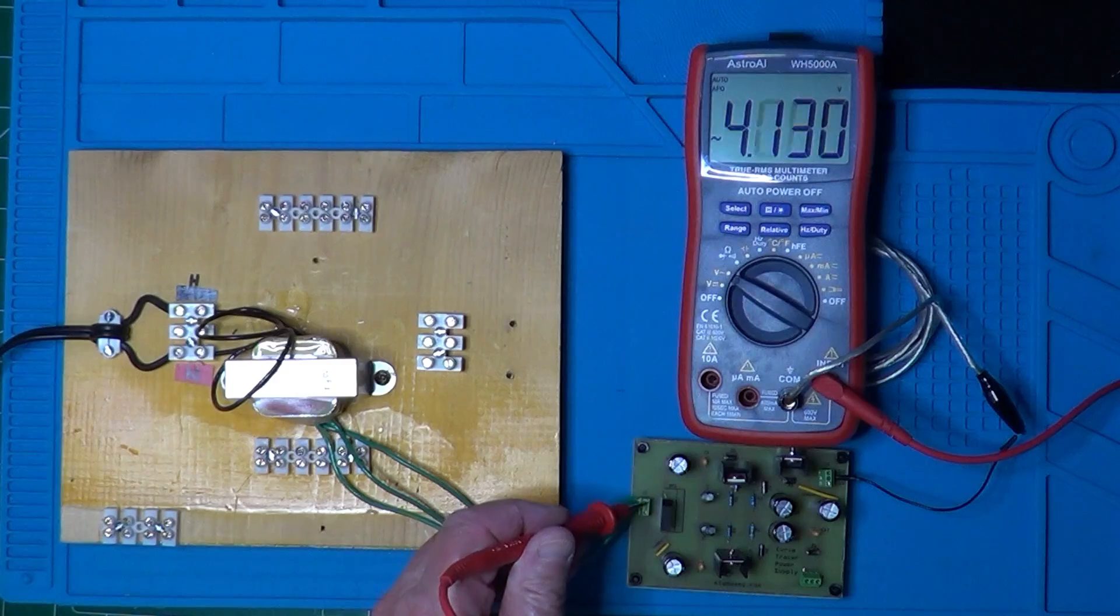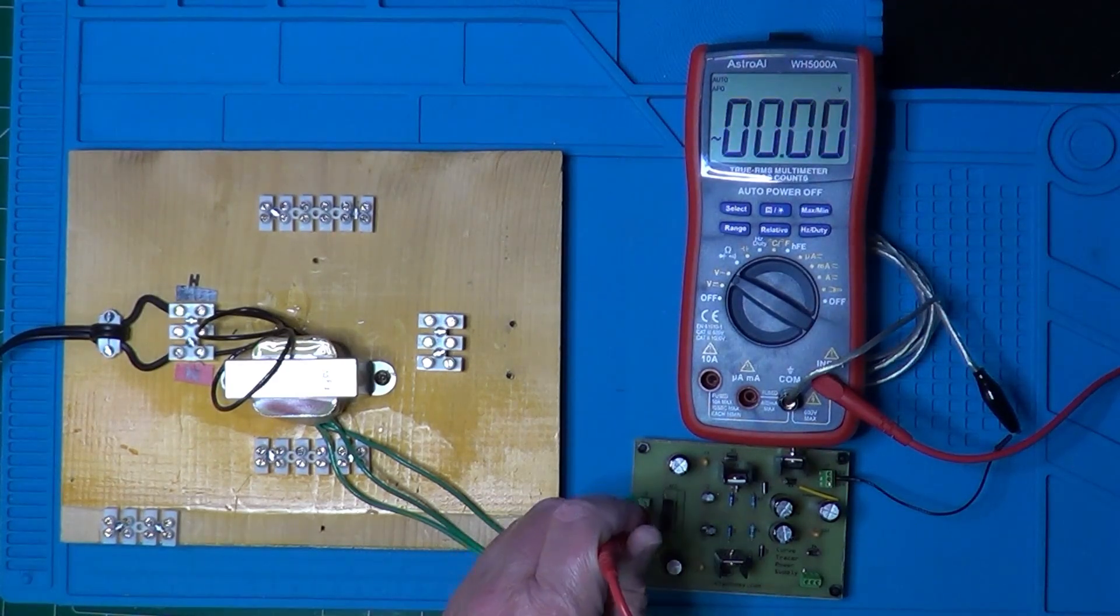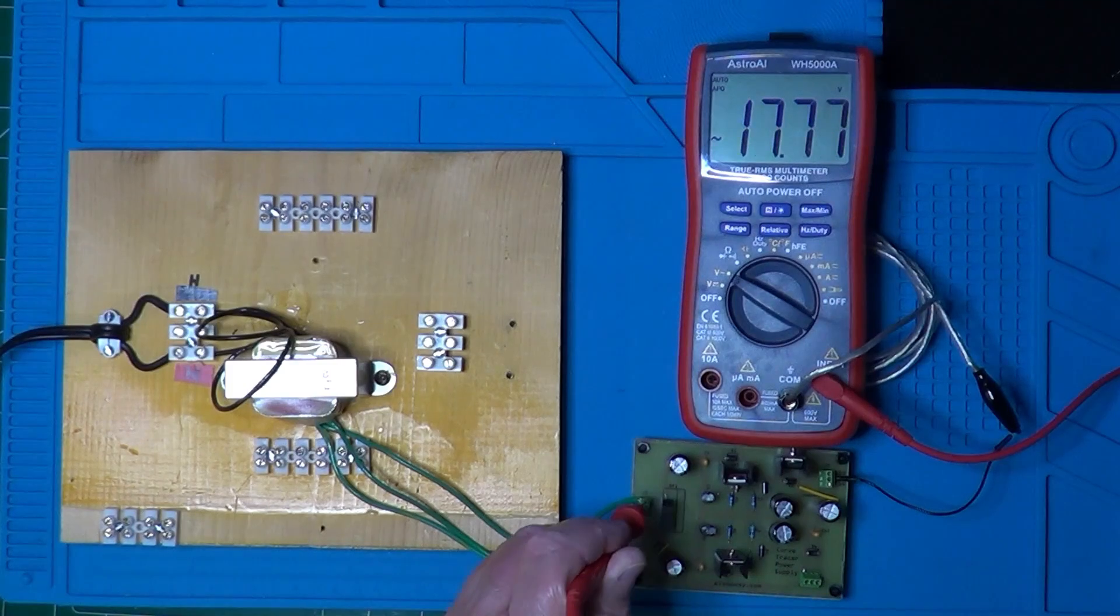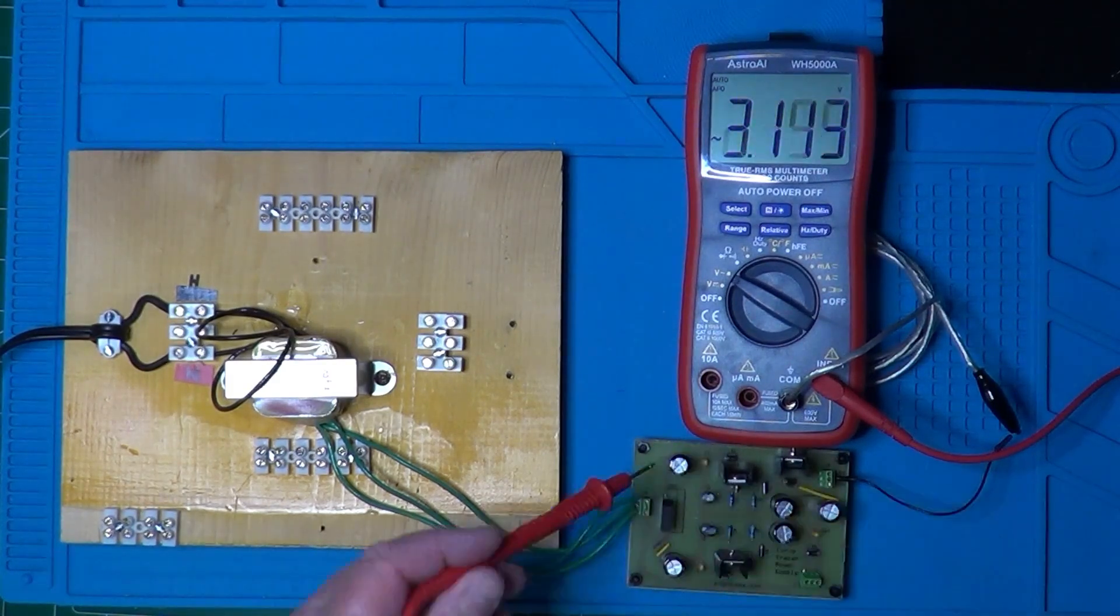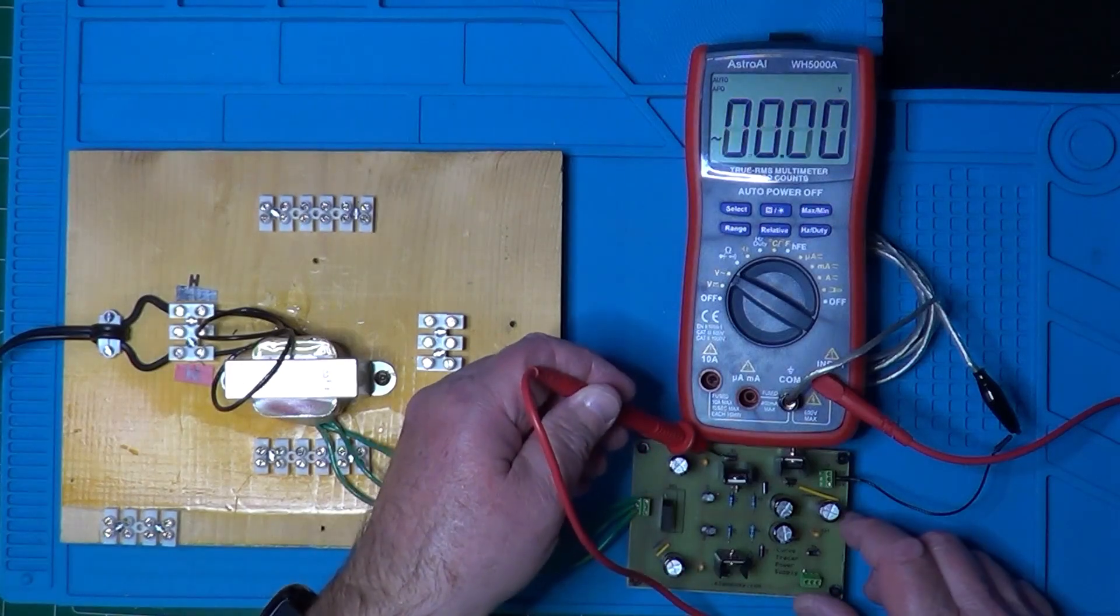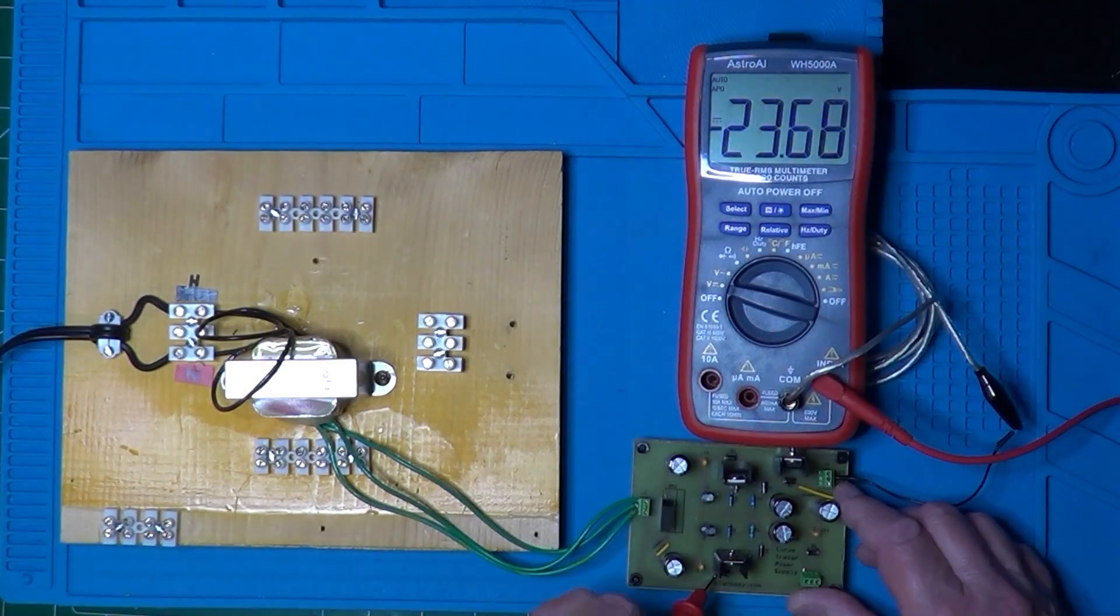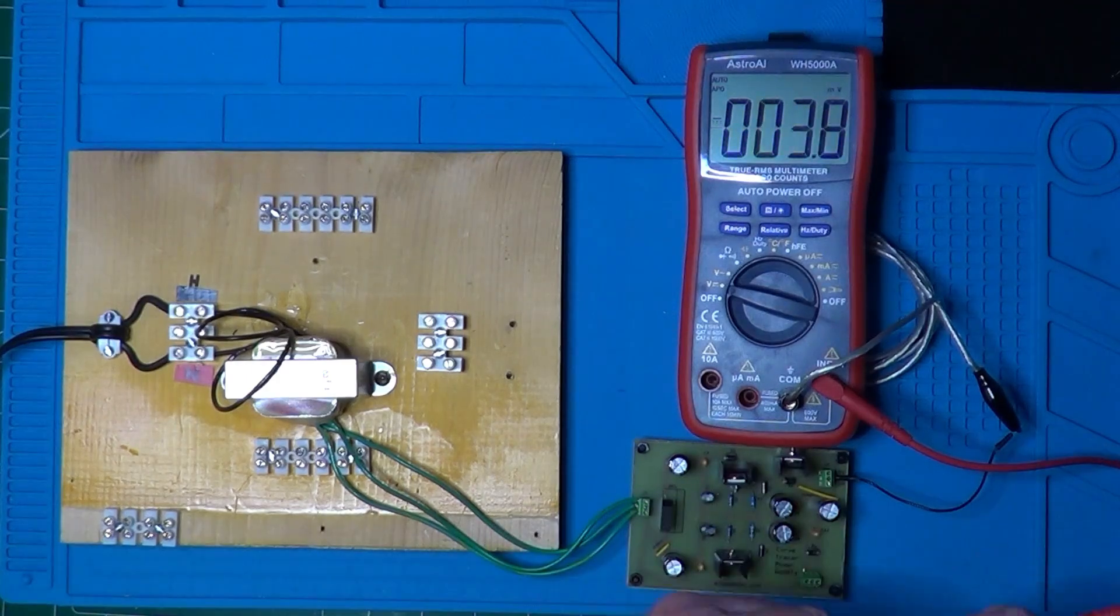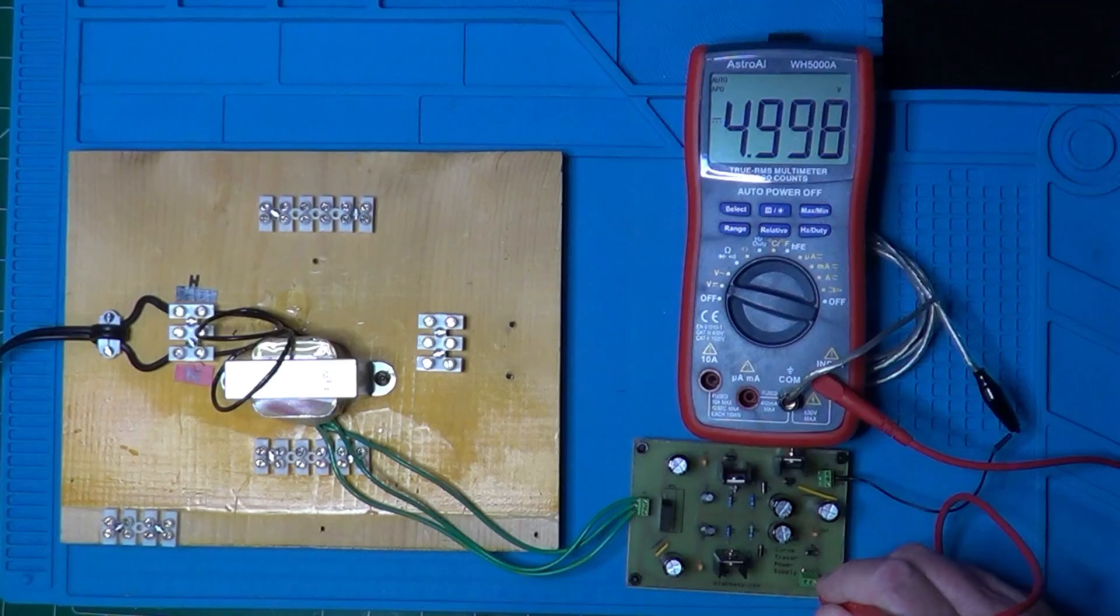With everything assembled, I tested the circuit by connecting it to the transformer that will be used for the final version of the device. Then I measured all the generated voltages, including the AC voltages from the transformer and the DC outputs from the regulators on the PCB: the plus 15 volts, the minus 15 volts, and the plus 5 volts.